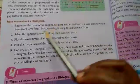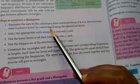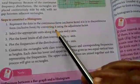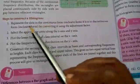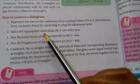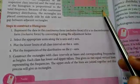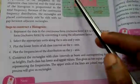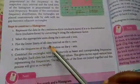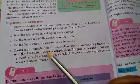Steps to construct a histogram: First, represent the data in continuous form — if it is not continuous, convert and adjust it. Second, select the appropriate units along the x and y axes. On the x-axis, place the class intervals, and on the y-axis, place the frequencies. Third, plot the lower limits of the class intervals on the x-axis and the frequencies on the y-axis.